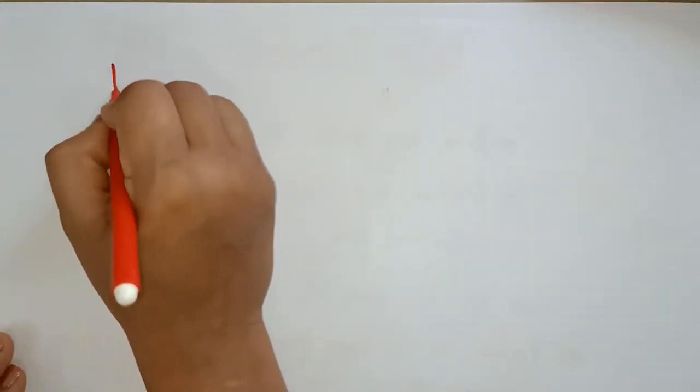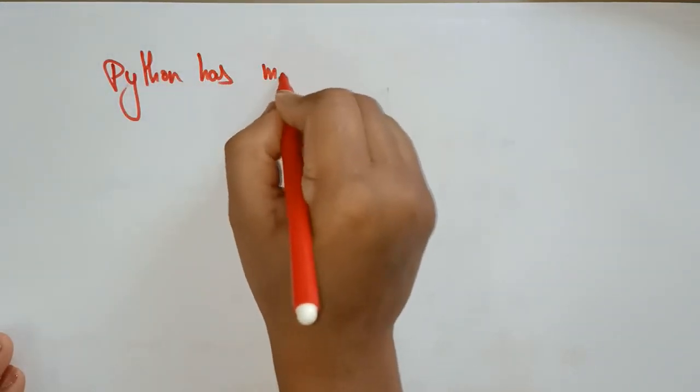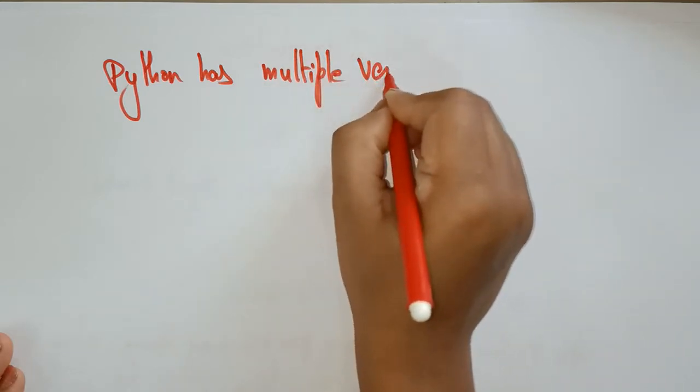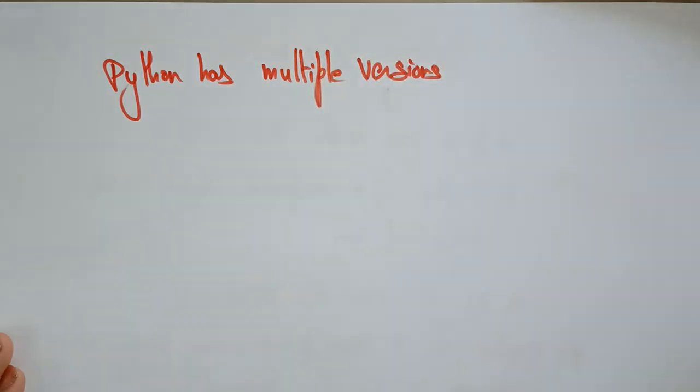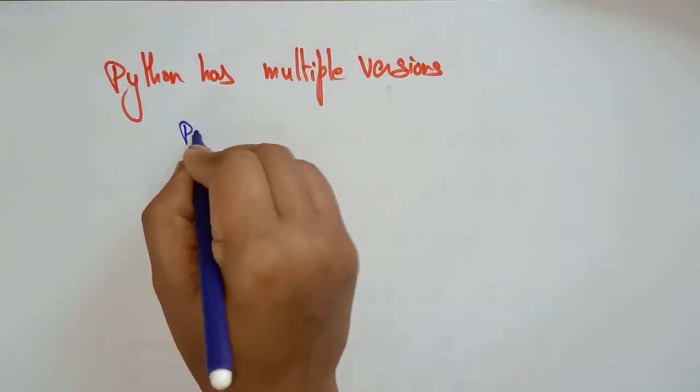So, now let's see versions in the Python. Python has multiple versions. So, what are those multiple versions?